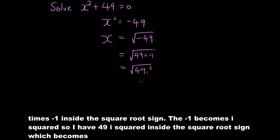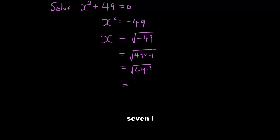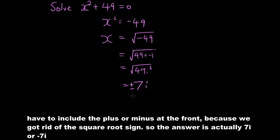So I have 49 i squared inside the square root sign which becomes 7i. And now we actually have to include the plus or minus at the front because we got rid of the square root sign. So the answer is actually 7i or minus 7i.